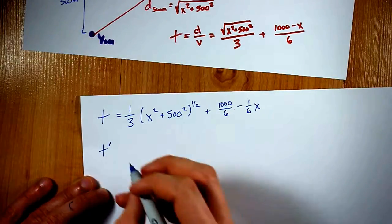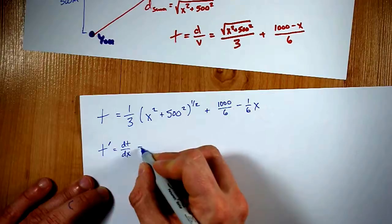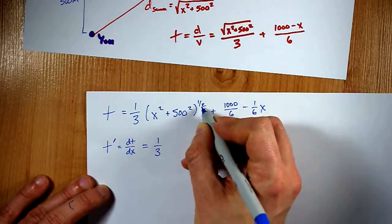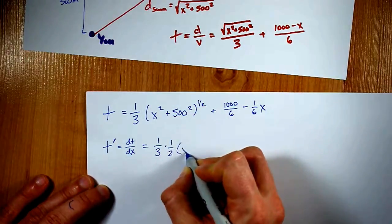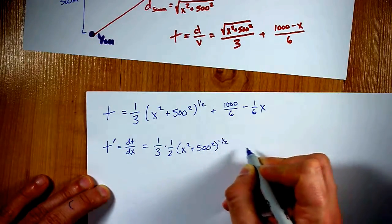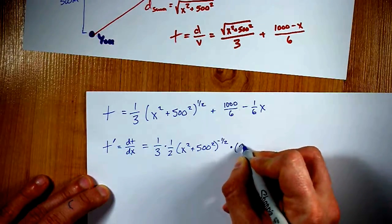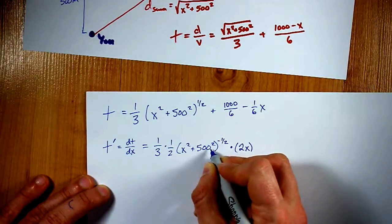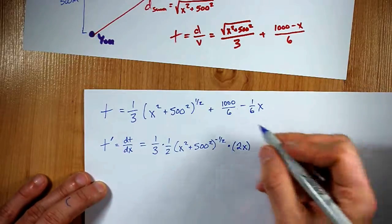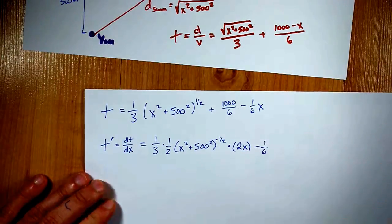All right. The derivative of time, or t prime, or if you want to call it dt by dx, you're more than welcome to, is the derivative of this. We'll keep the constant out front, bring the exponent down, that's one-half, keep the inside the same, and notch the exponent down by one, that's power rule, times the derivative of the inside, that's chain rule, it's just 2x. 500 squared is a constant, plus the derivative of this, which is zero, because it's a constant, minus the derivative of this, which is just one-sixth. There we go.